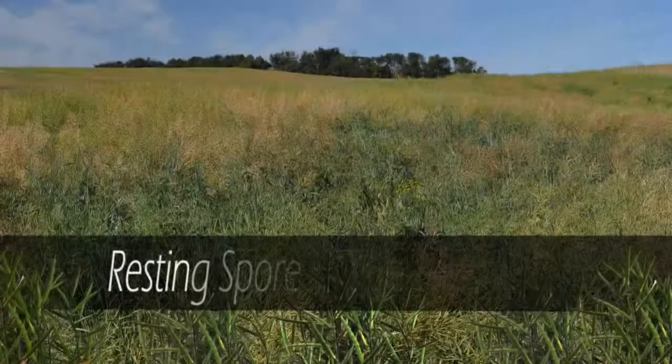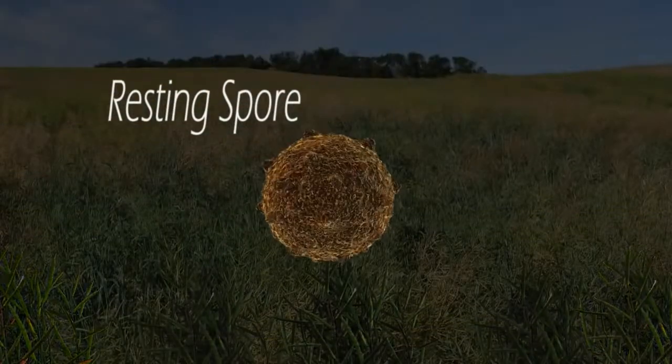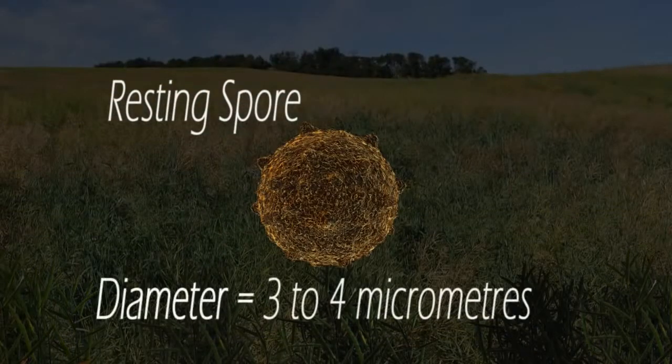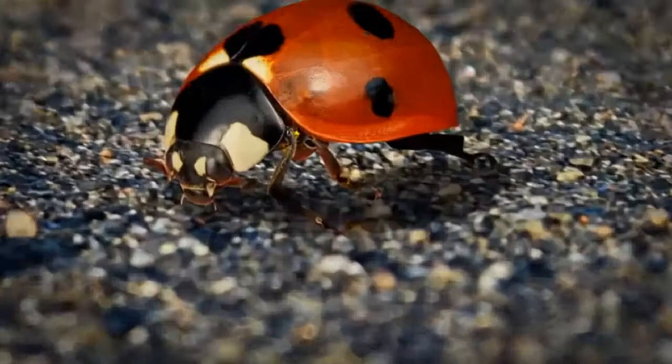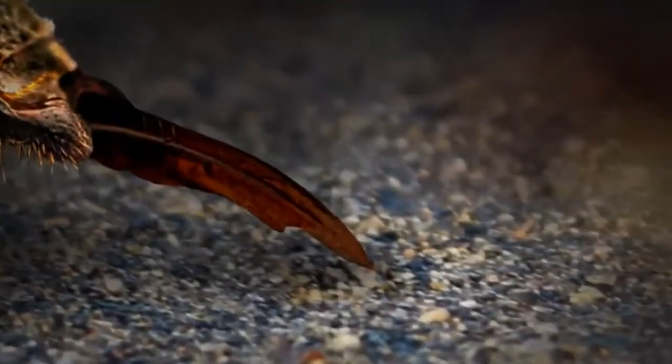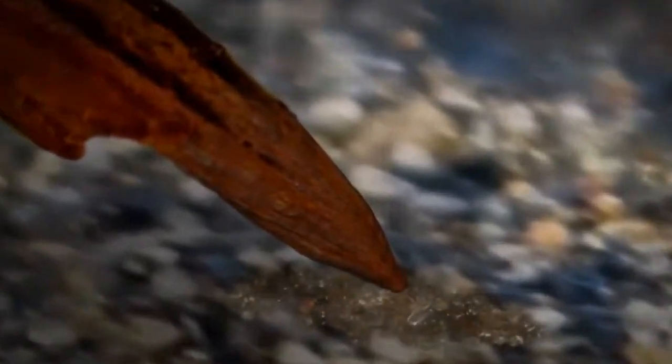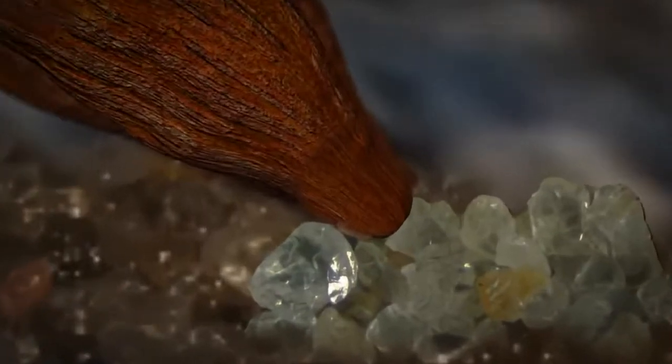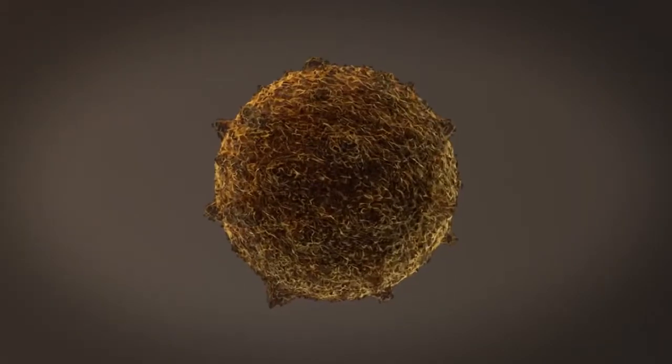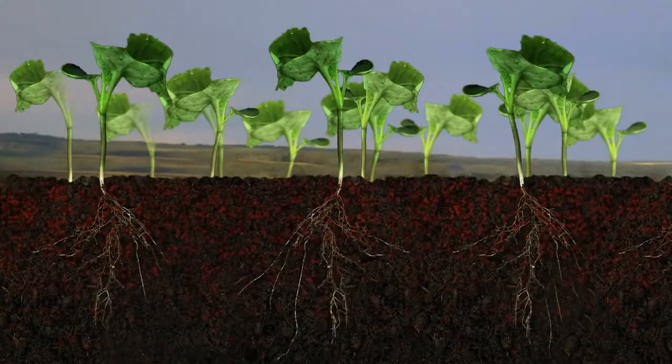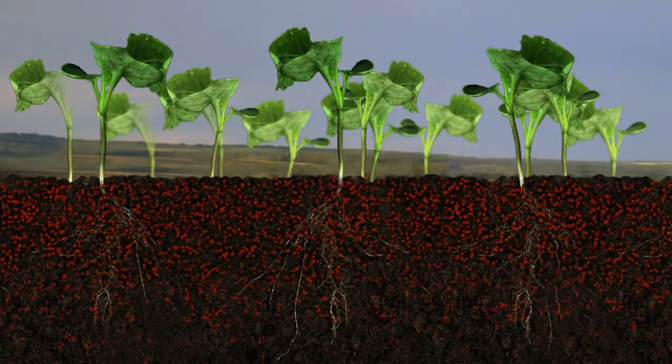Plasmodiophora brassicae starts its life cycle as a resting spore. This spore, although very small, is remarkably hardy and can persist in the soil for up to 20 years. The resting spores are normally found in the upper layers of soil, which is the prime location to begin the actual infection process.